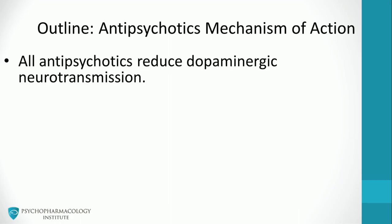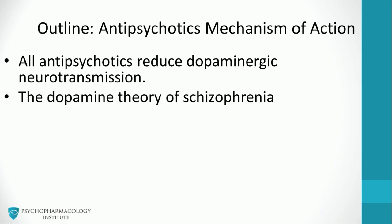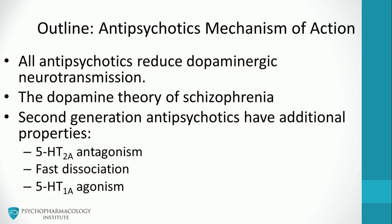First, we'll see how all antipsychotics reduce dopaminergic neurotransmission. We will also review the dopamine hypothesis of schizophrenia. And finally, I will present some relevant pharmacological properties of second generation agents, such as 5HT2A antagonism, fast dissociation from D2 receptors, and 5HT1A agonism.